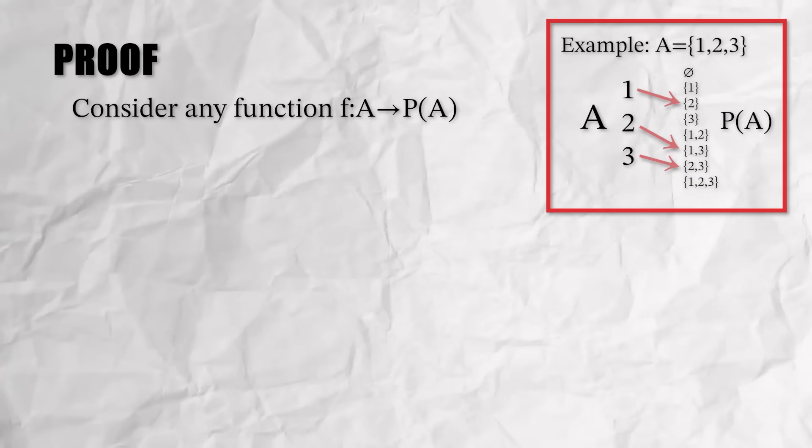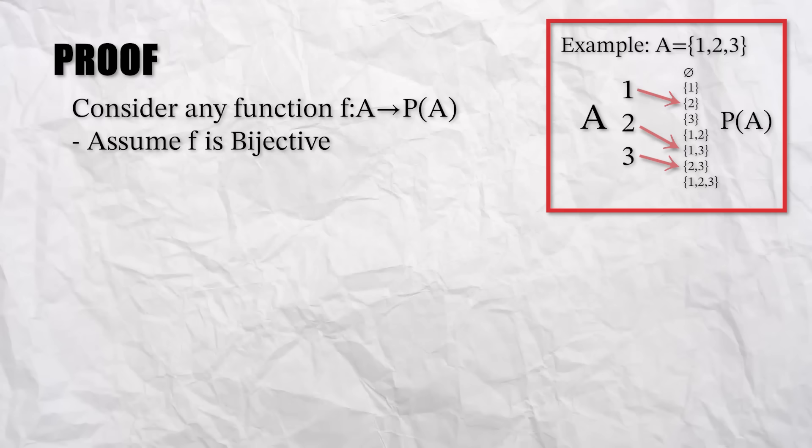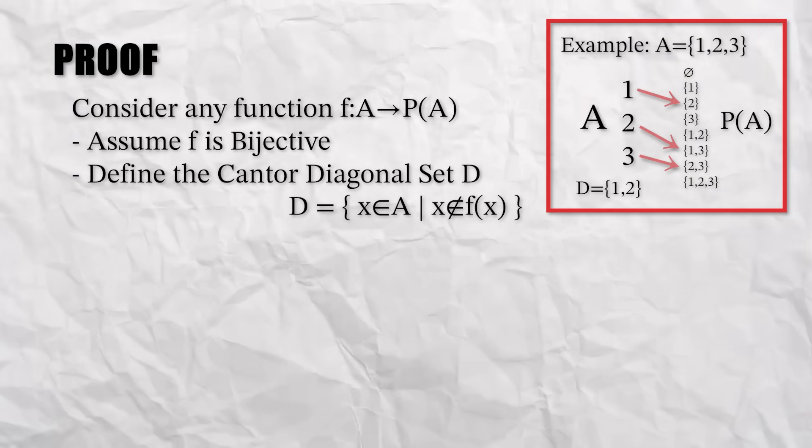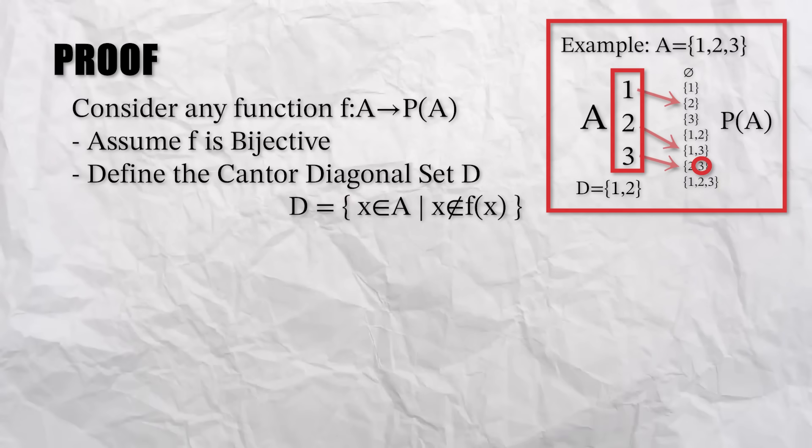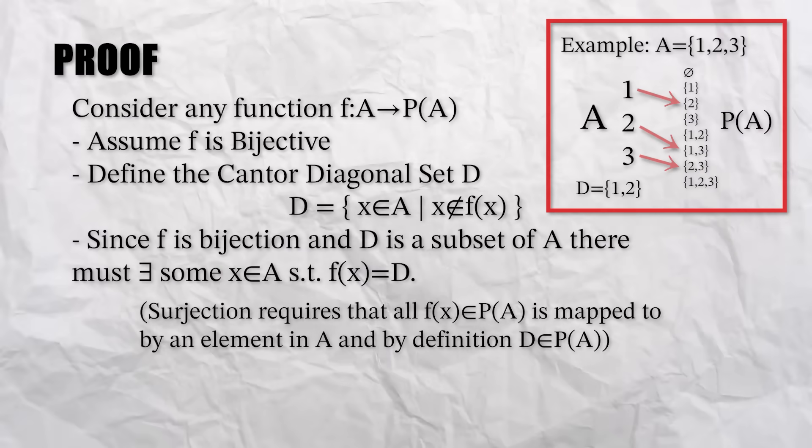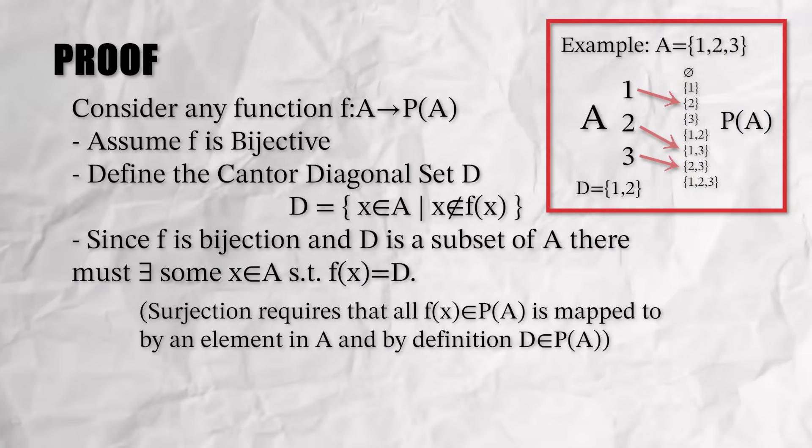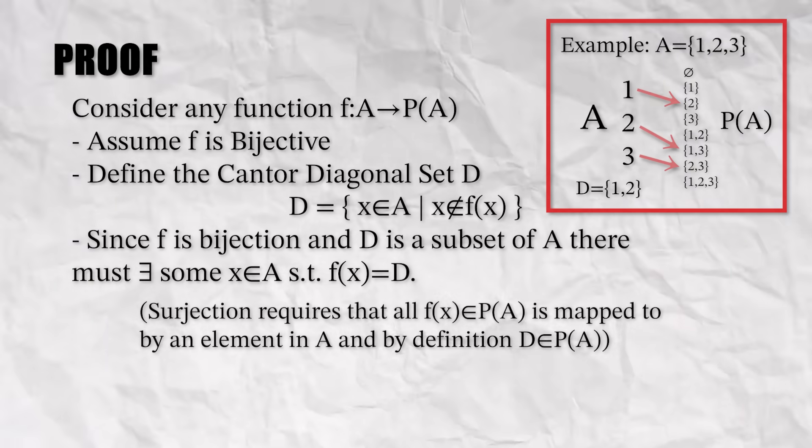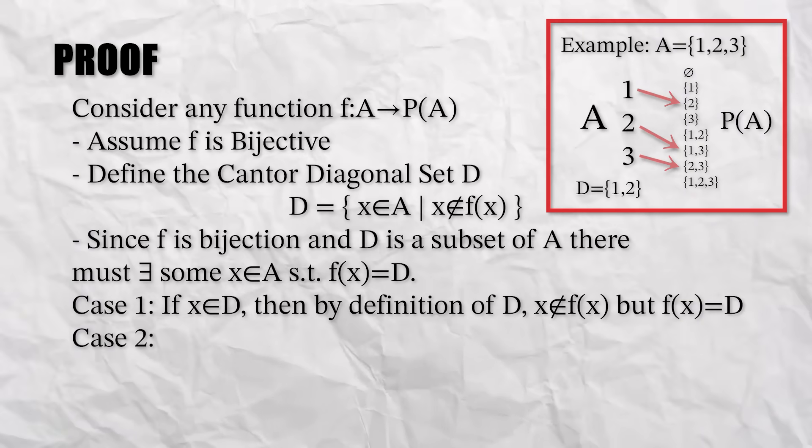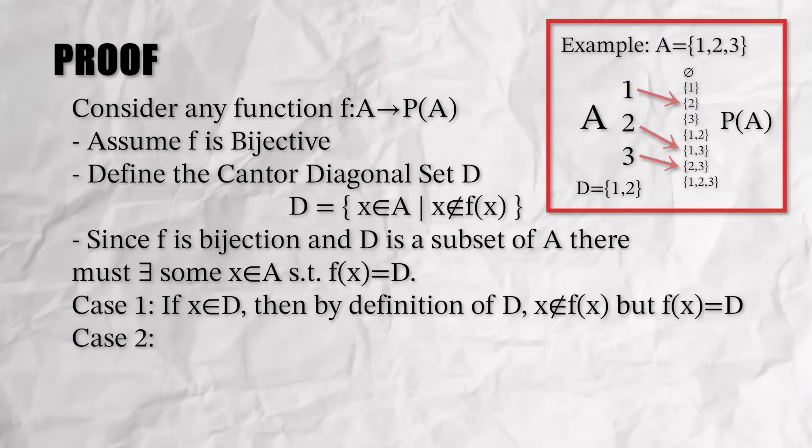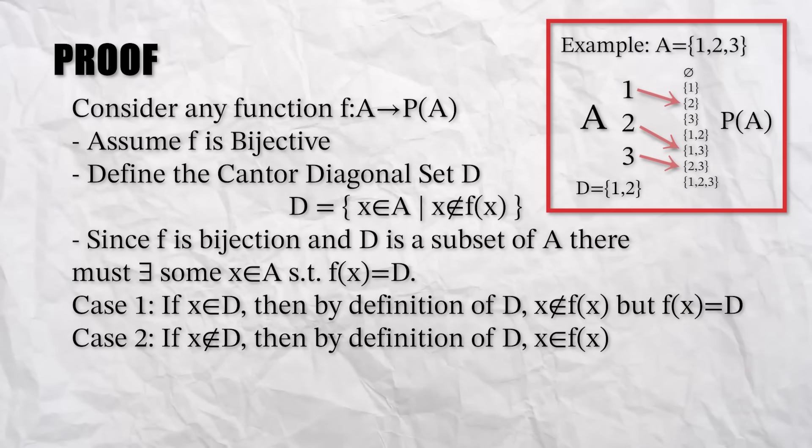But what Cantor found is that this also applies to infinite sets. We consider any function f from A to the power set of A and assume that it is bijective. We now define a special subset of A to be the Cantor diagonal set. This is the set that contains all elements of A which do not map to a subset of A that they're contained in. Now since f is a bijection and d is a subset of A, there must exist some element x in A such that f of x equals d. This leaves us with two possibilities. If x is in d, then by definition of d, x is not in f of x, but f of x is d. This contradicts the assumption that x is in d. And if x is not in d, then by the definition of d, x is in f of x, which is equal to d. This also contradicts the assumption that x is not in d.